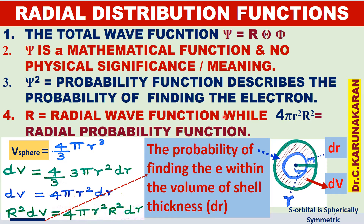The radial wave function is given by R. The radial probability function is given by 4πr²R². It is obtained by squaring the radial wave function R to get R², then multiplying by 4πr². This is called the radial probability function or radial distribution function.